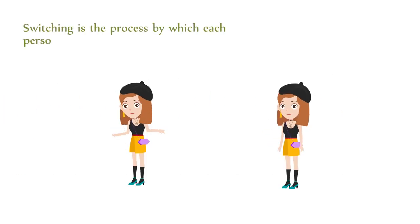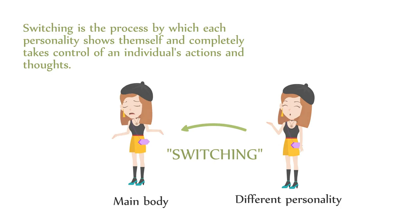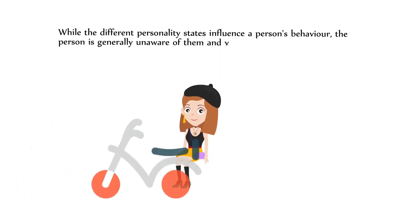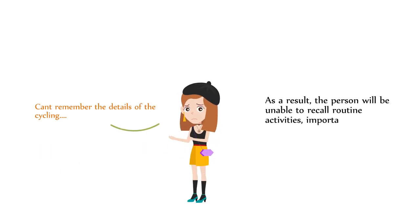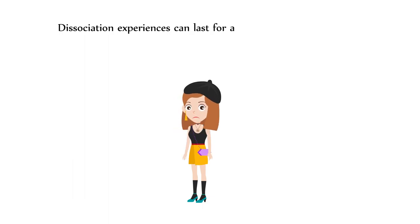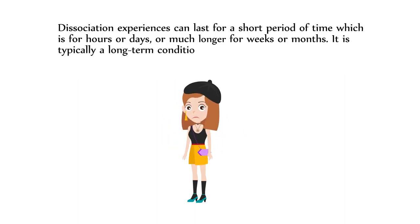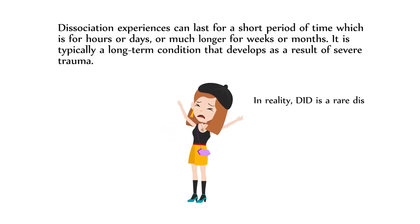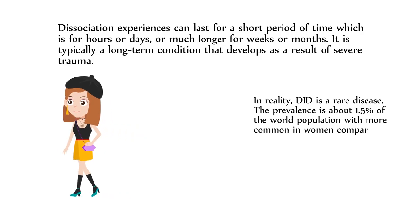Switching is the process by which each personality shows itself and completely takes control of an individual's actions and thoughts. While the different personality states influence a person's behavior, the person is generally unaware of them and views them as memory lapses. As a result, the person will be unable to recall routine activities, important personal information, and stressful situations. Dissociative experiences can last for hours or days, or much longer — for weeks or months. It is typically a long-term condition that develops as a result of severe trauma. In reality, DID is a rare disease, with a prevalence of about 1.5% of the world population, more common in women compared to men.